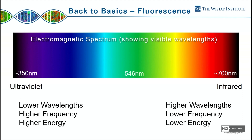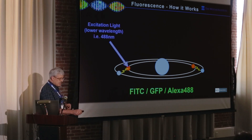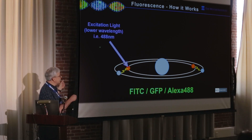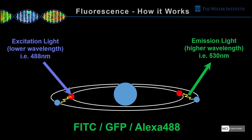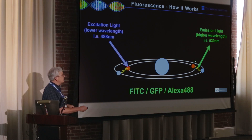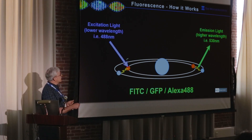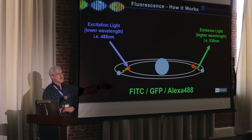This becomes important when we're trying to excite fluorophores. The way fluorescence actually works: consider a fluorophore with a nucleus and electrons in the outer shell. When you excite it with a higher energy photon, it knocks an electron into an outer valence shell. It stays there a very short time, then comes back down to the original state, releasing some energy — but not as much as went in, due to heat loss. So you're exciting at a lower wavelength and emitting at a higher wavelength — exciting in blue, emitting in green, for example.